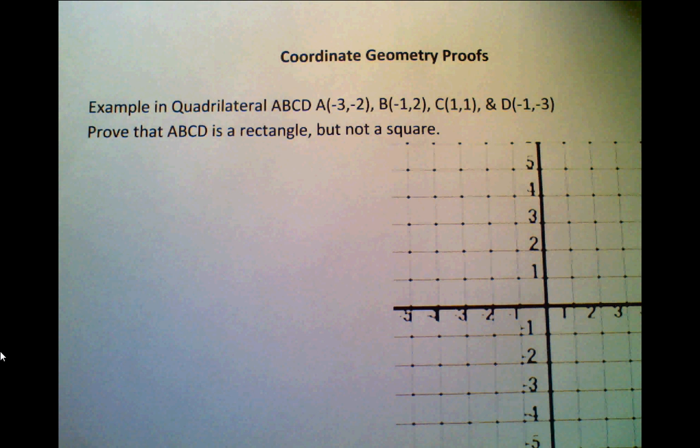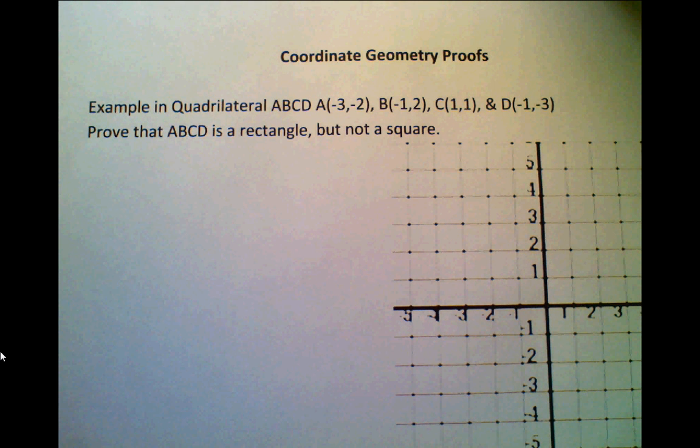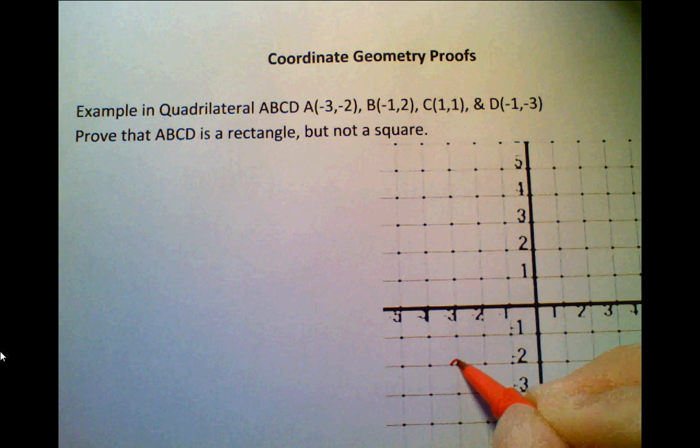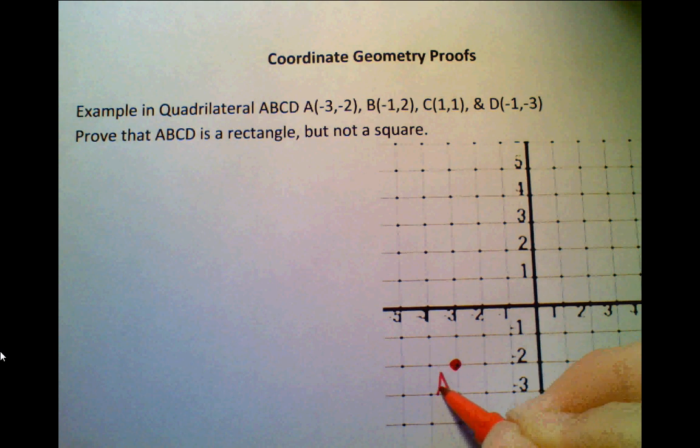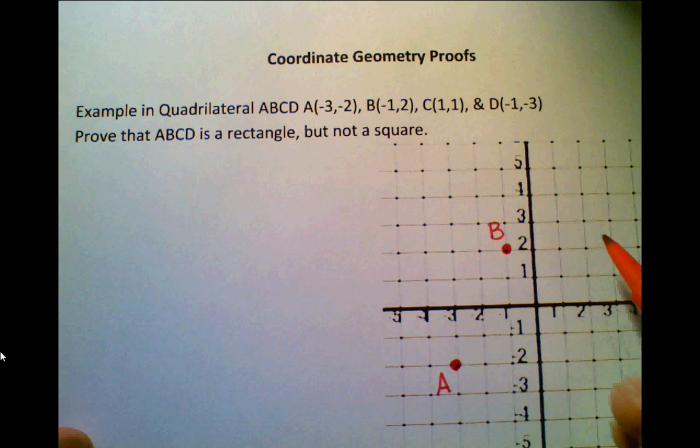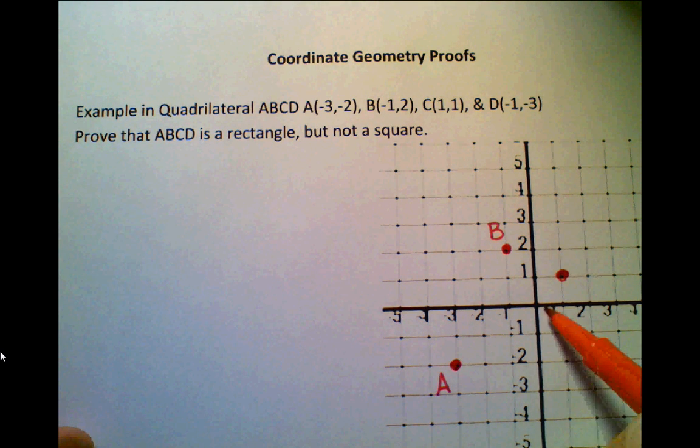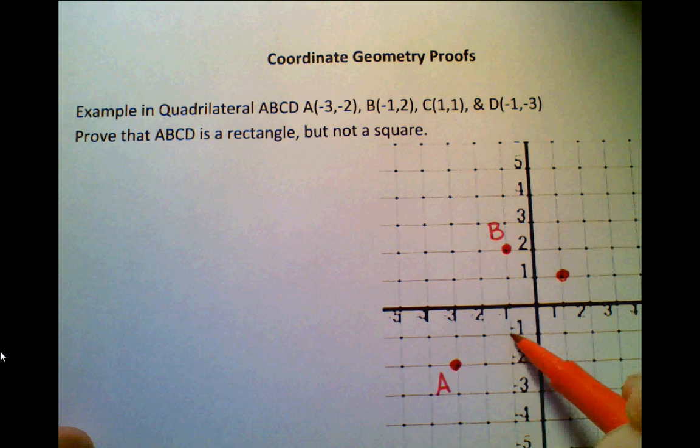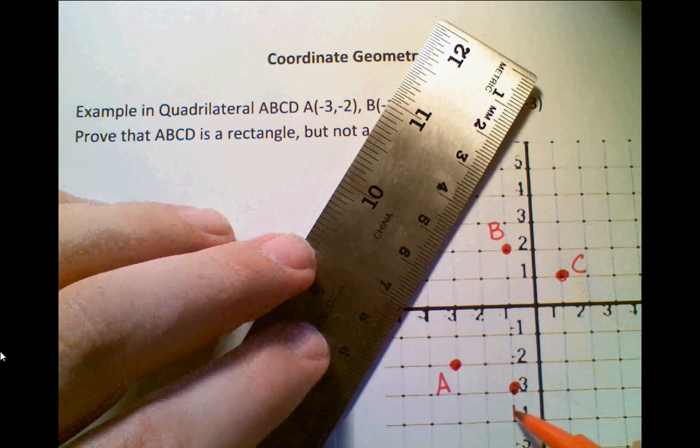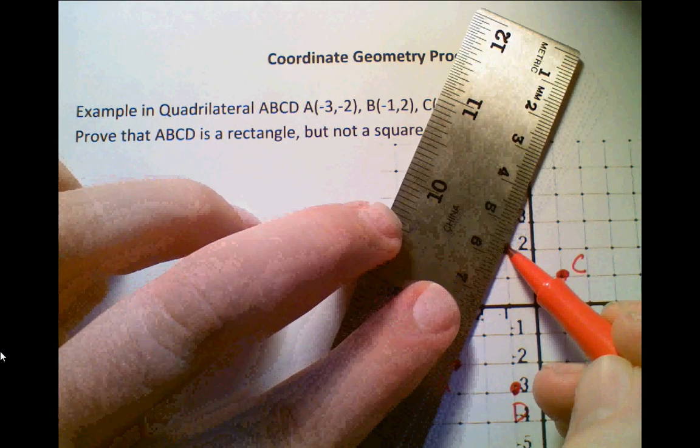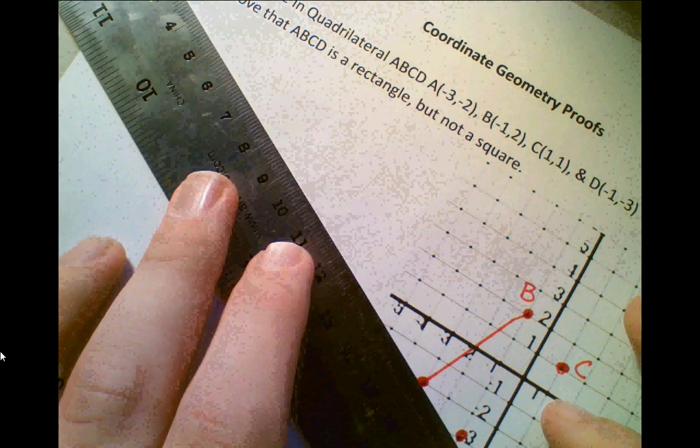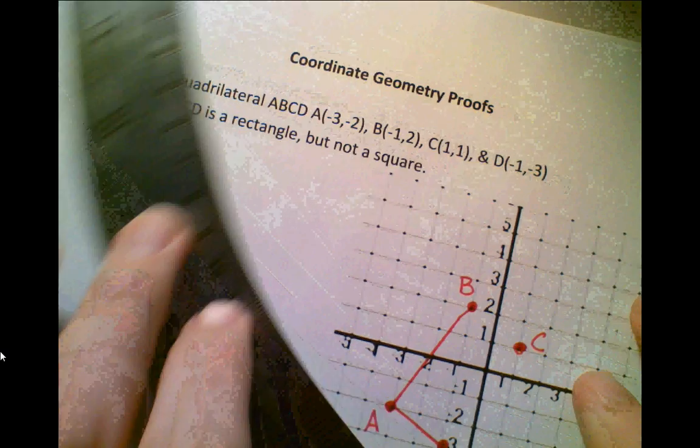So let's take a look at this example. Quadrilateral ABCD: A is (-3, -2) right there, B is (-1, 2), C is (1, 1), and D is (-1, -3). Now, the first thing you're going to do is you're going to plot all these points, and then you're going to basically create the shape that you need to.